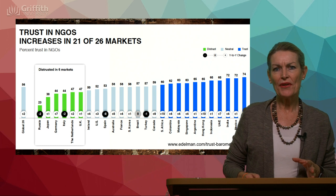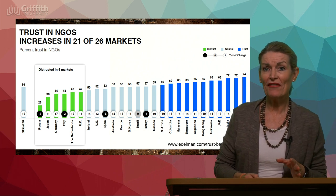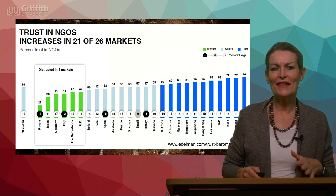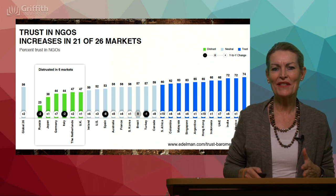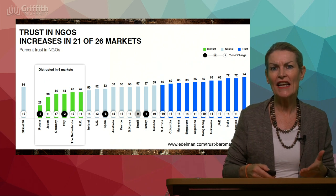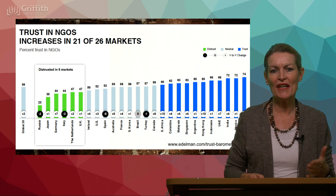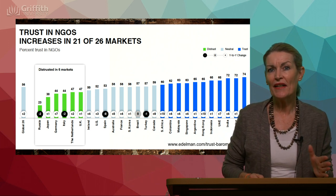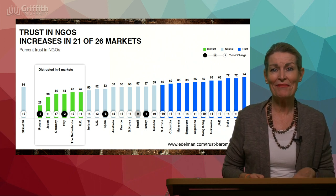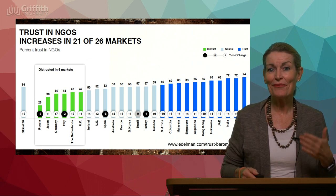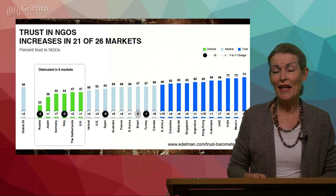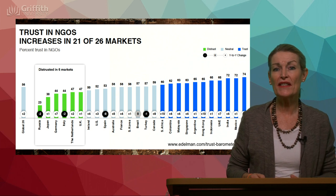There is a graph of trust in non-government organizations from Edelman — the link is provided. It's quite significant in terms of trust, distrust, and how we're situated. There are six markets showing distrust in NGOs, including the UK, Germany, Italy, and the Netherlands. That's interesting because the Netherlands, where Greenpeace has been based for many years, shows distrust. Think critically about what that trust factor actually means and what has happened in those countries.